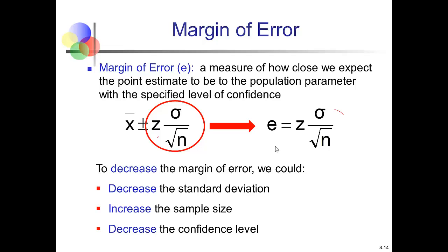We'd like the confidence interval to be relatively narrow, because then we have a more accurate measure of where the true population parameter might be. To decrease the margin of error, we can decrease the standard deviation—sometimes we can do that, sometimes we can't, depending on the context. We could also increase the sample size: as sample size increases, the denominator gets bigger, making the margin of error smaller.